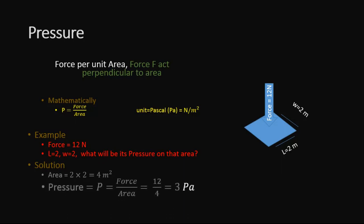Now we know that pressure P equals force divided by area. Putting the values in this equation: 12 divided by 4, which equals 3. The pressure due to the 12 Newton force on 4 meter square area is equal to 3 Pascal.